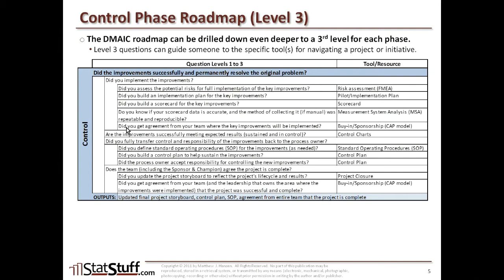The last question here is: did you get agreement from your team about where the improvements will be implemented? You need to go back through getting the sponsorship necessary to make sure the team agrees not just that improvements will be implemented, but where they'll be implemented and agrees to the entire plan for how those improvements will be rolled out. Once we can answer yes to these third-level questions, we should be able to say yes — at this point the improvements are fully implemented — and move on to the next second-level question.